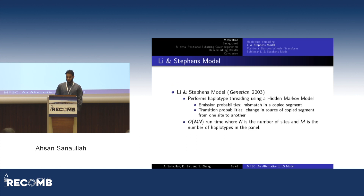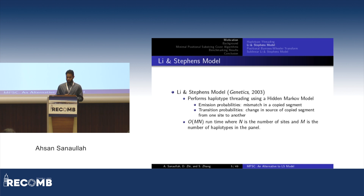Currently, the state-of-the-art haplotype threading model is the Li-Stevens model. It was introduced in 2003 and provides a linear time solution, linear to the size of the panel. The Li-Stevens model works using a hidden Markov model, where mismatches are represented using emission probabilities and recombinations are represented using transition probabilities.